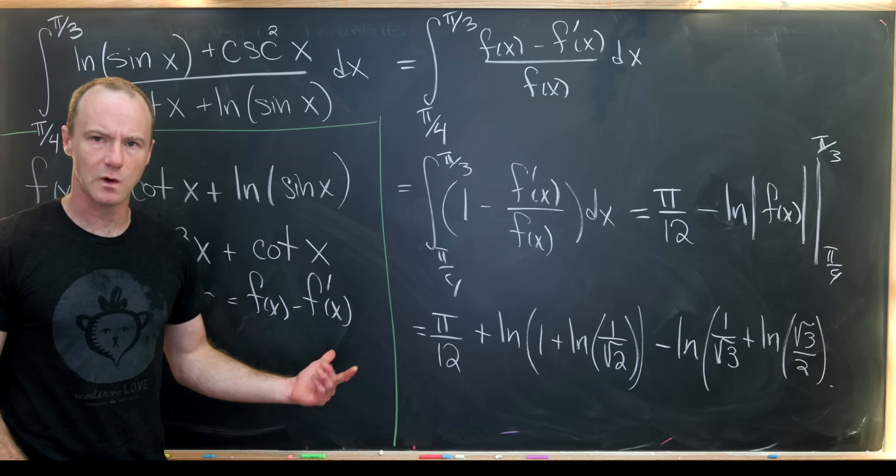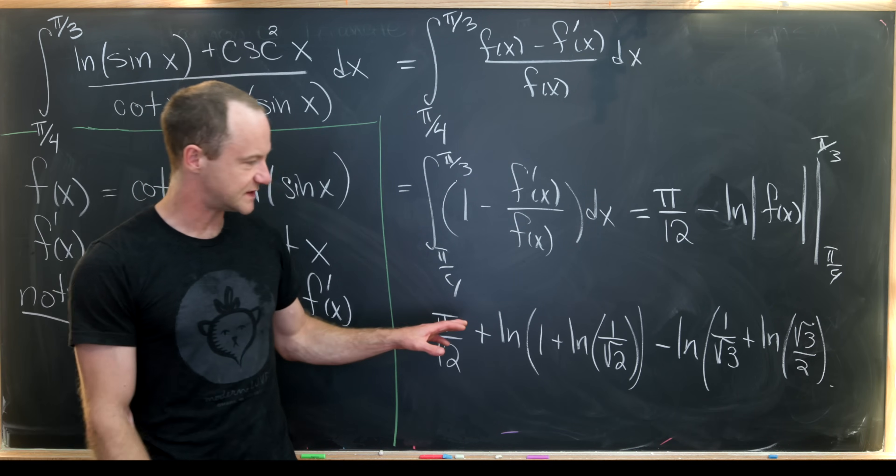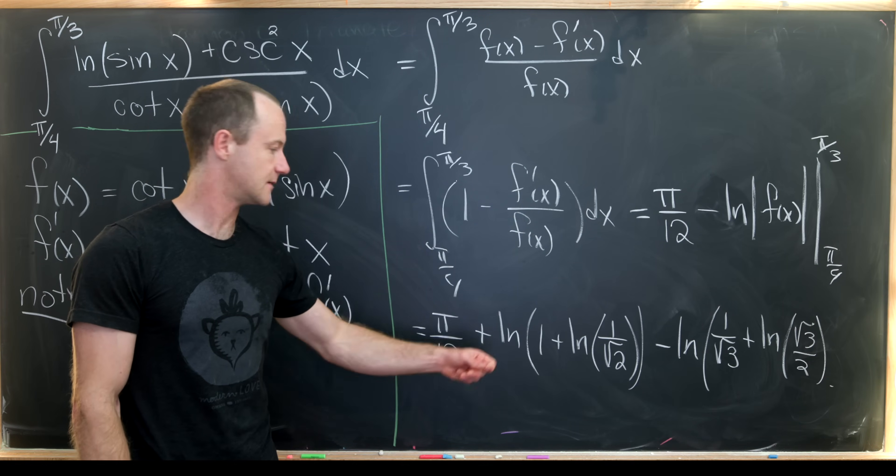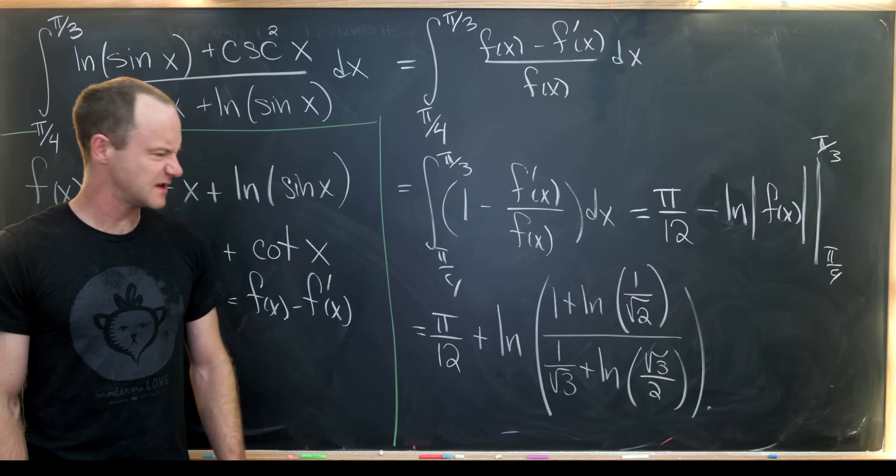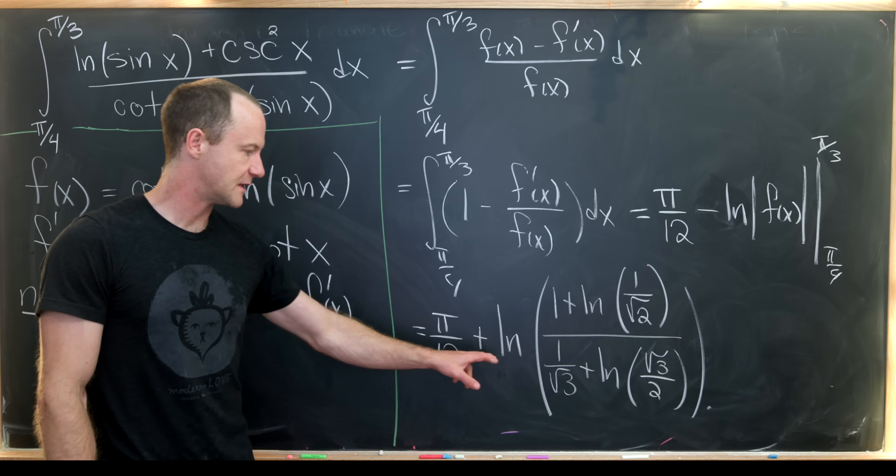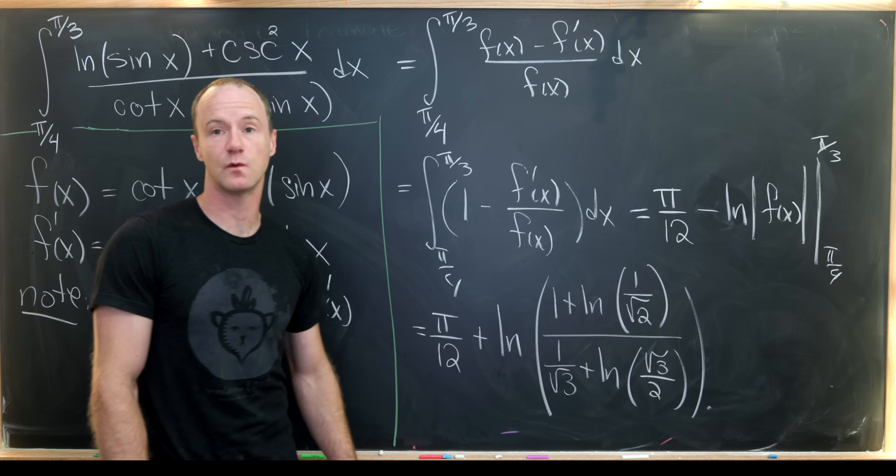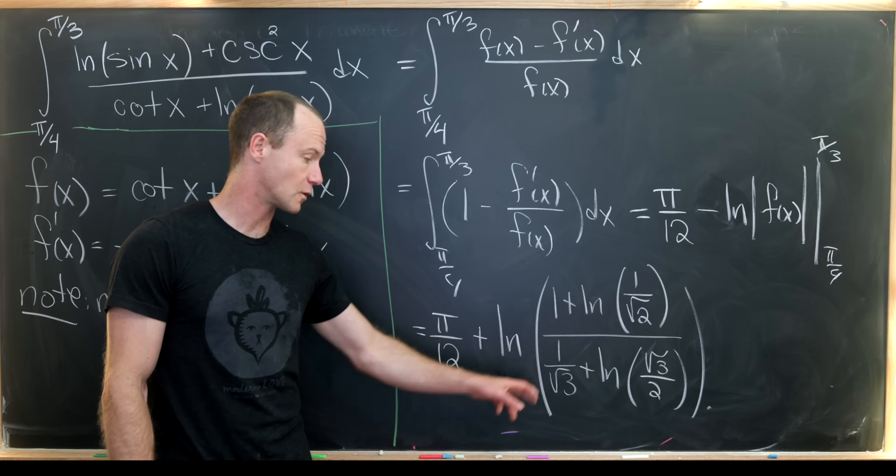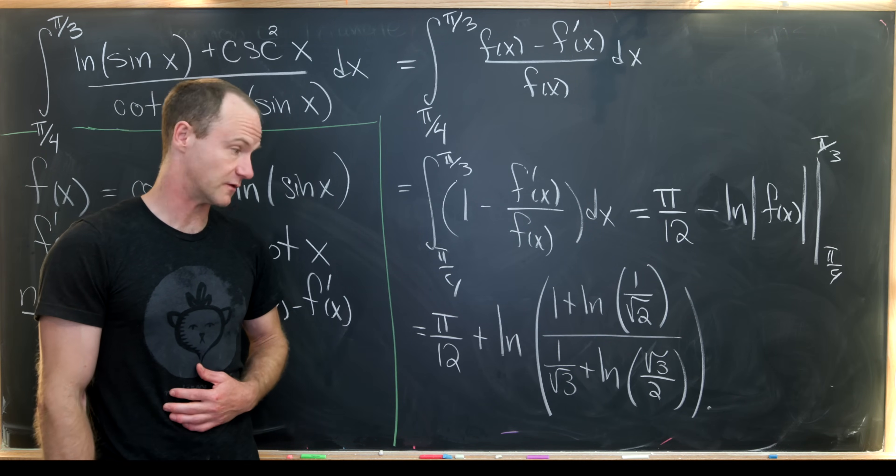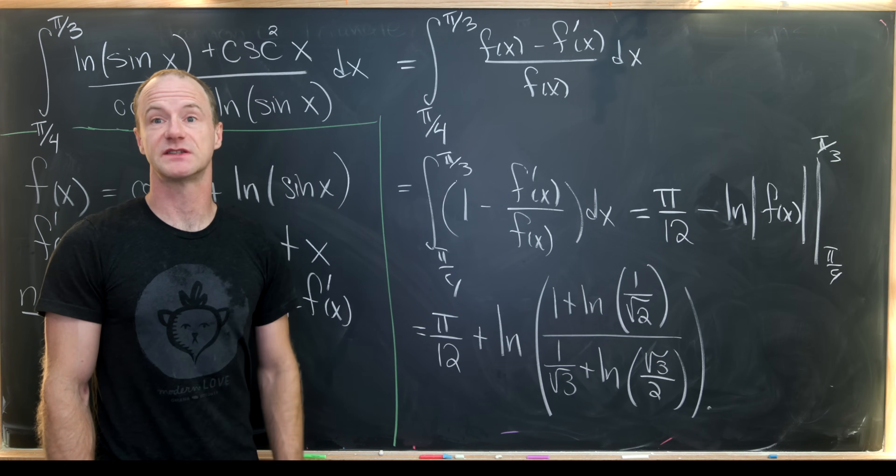And I guess there's one more thing we could do. We could use natural logarithm rules to put these two terms together. So let's do that. And there we've got it. I think that's a nice form for this final answer. We have π/12, then we have the natural log of one plus natural log of one over root two over one over root three plus natural log of root three over two. And that's a good place to stop.